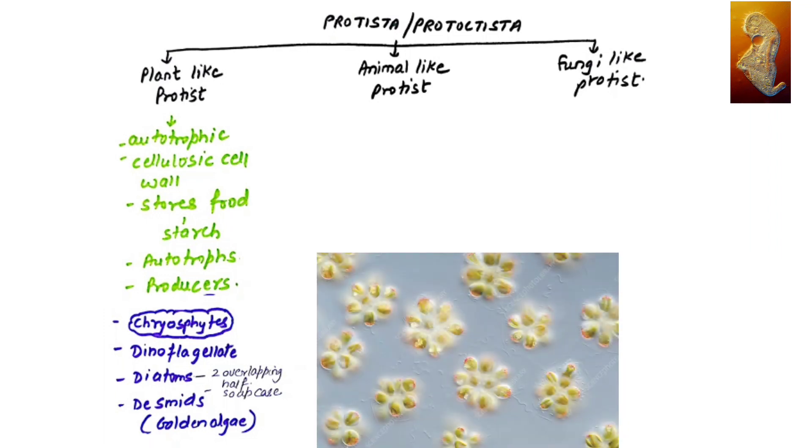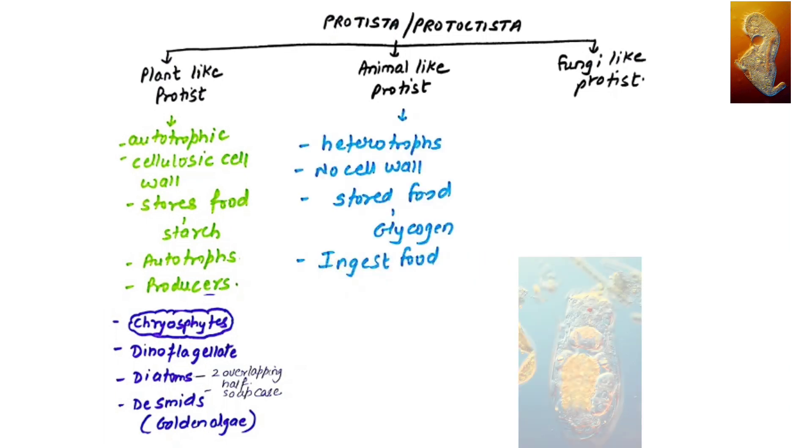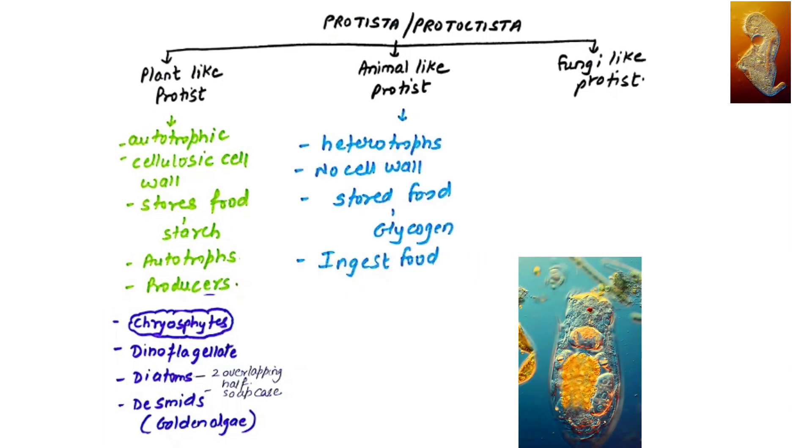When we talk about animal-like protists, they are heterotrophs. They derive nutrition from others, so they are consumers. They do not have cell wall because animals don't have cell walls. They store food in the form of glycogen, and they always ingest food. Examples include amoeba and paramecium.